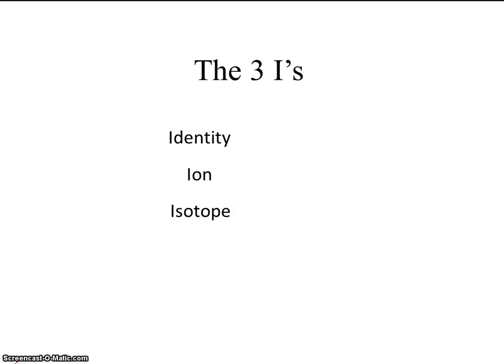The identity of an atom or element is determined by the number of protons that it has. If an atom is an ion, that will be determined by the number of electrons that it has. And the way we can tell isotopes apart is by the number of neutrons that they have.